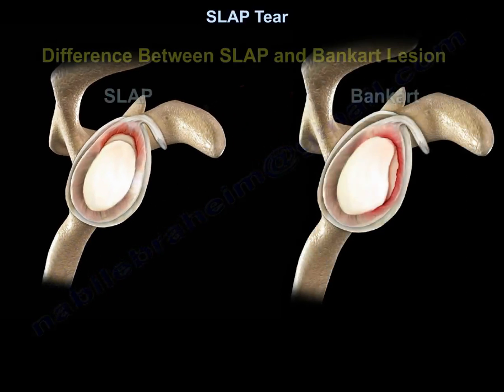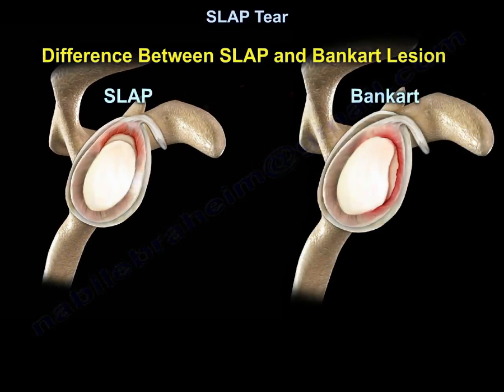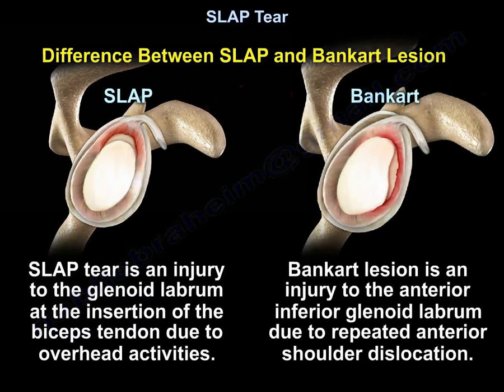What is the difference between a SLAP tear and a Bankart lesion? A SLAP tear is an injury to the glenoid labrum at the insertion of the biceps tendon due to overhead activities. The Bankart lesion is an injury to the anterior inferior glenoid labrum due to repeated anterior shoulder dislocation.